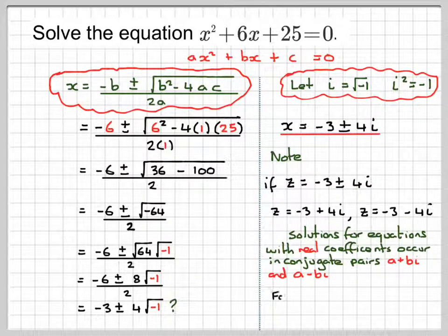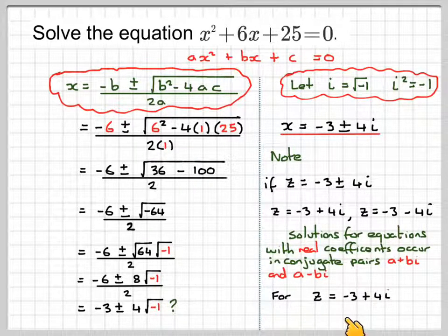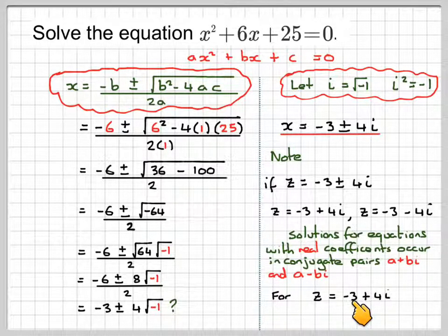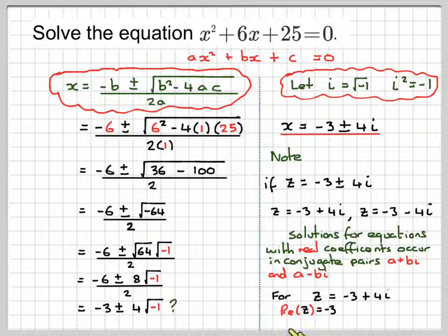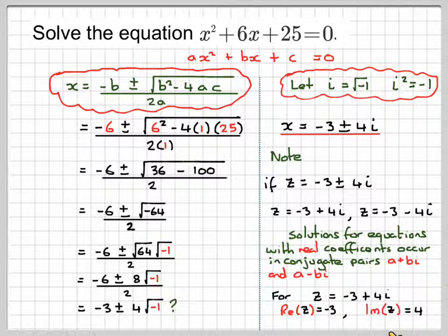And another thing to note here is, for z equal to the complex number minus 3 plus 4i, is made up of two parts. The first number here is called the real part, so minus 3. And the second number here, the 4, is called the imaginary part. So the real part of z, if z is that complex number, is minus 3. And the imaginary part of z is 4.